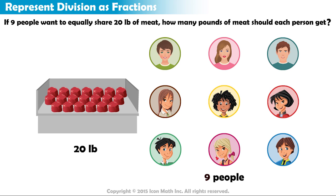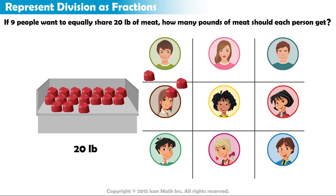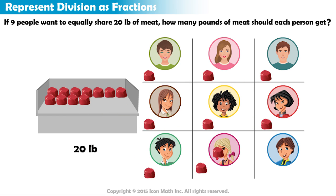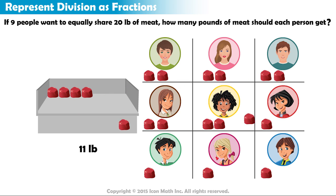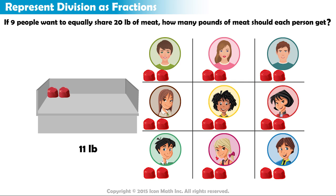Nine does not go into 20 evenly, so what do we do? Let's give each person one pound of meat. Now we have 11 pounds of meat left. If we give each person one pound of meat again, then each person will have two pounds of meat, and we'd have two pounds of meat left.